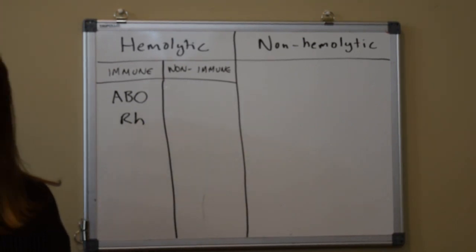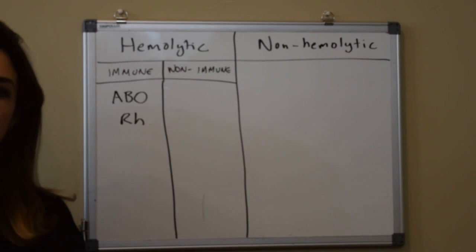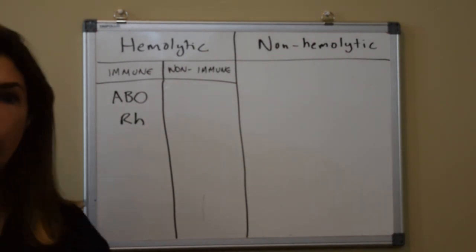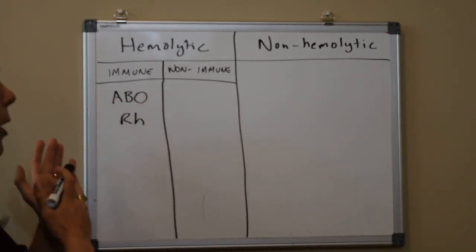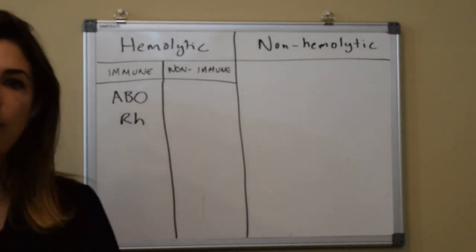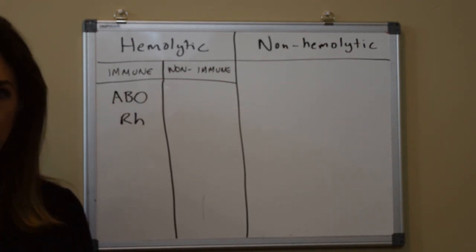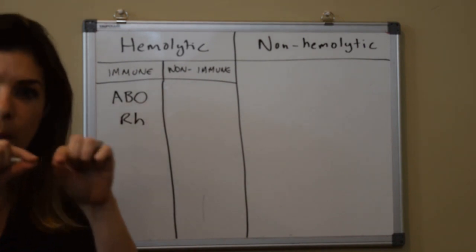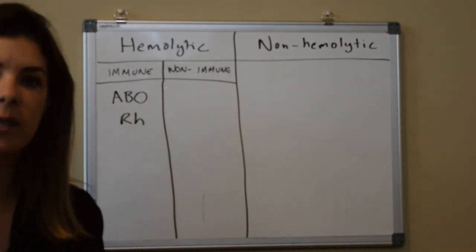The immune reasons for hemolysis are basically when the mother produces antibodies that cross the placenta, attach onto the baby's red blood cells, and cause them to break down. The non-immune causes of hemolysis are when something is wrong either with the way energy is formed within the red blood cell — so it runs out of energy — or there's something wrong with the membrane of the red blood cell that causes it to break down much faster than it should.